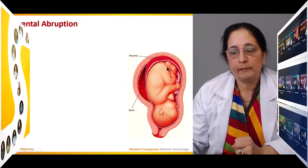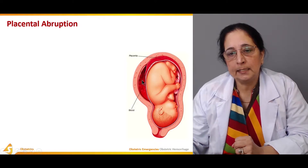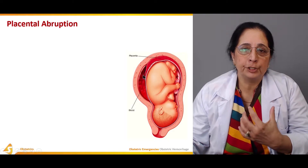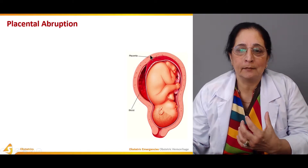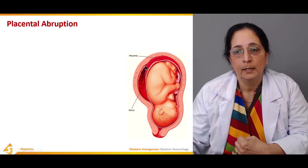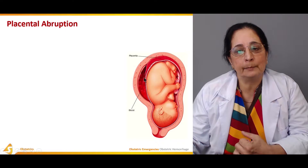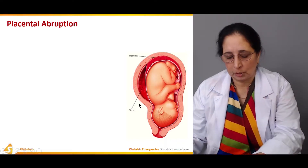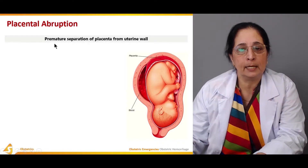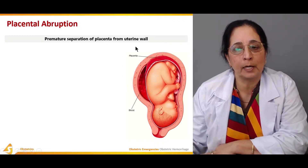In this diagram, this is the placenta, this is the lining of the uterus, and this is the blood. What happens with abruption of the placenta is there is a premature, early separation of the placenta from the lining of the uterus, and as a result of that there is blood in the uterus. Abruptio placentae is the premature separation of the placenta from the uterine wall.